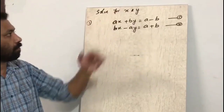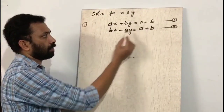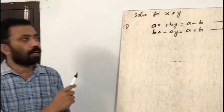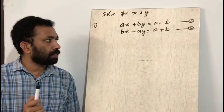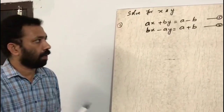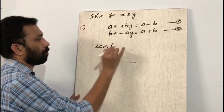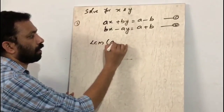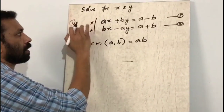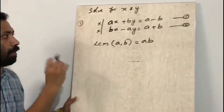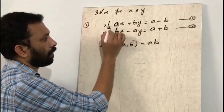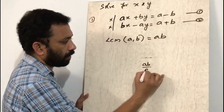First question: solve for x and y — ax + by = a - b and bx - ay = a + b. Here the coefficients are variables, so the elimination method is the best. First, we find the LCM of the coefficients of x, which are a and b, giving LCM = ab.